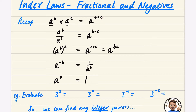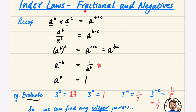Hopefully these are all things you remember. As a quick example: 3 cubed means 3 times 3 times 3 — that's 27. 3 to the power of 0 is 1. 3 to the power of minus 1 is 1 over 3. And 3 to the power of minus 2 is 1 over 3 squared, which is 1 over 9. These examples demonstrate that we can find any integer powers — positives, negatives, even zero. Now we're going to move into fractional powers, and even decimals that can be turned into fractions.